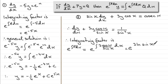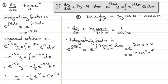Using the power rule for logarithms, 3 times the natural log of sin(x) becomes the natural log of sin cubed x. So we have e to the natural log of sin cubed x. When you have e to the natural log of something, you simply remove the natural log, giving us sin cubed x as the integrating factor.